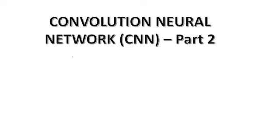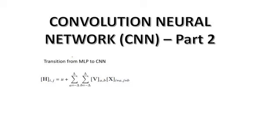Hello everyone, welcome back to By Itself CEC. We are doing part 2 of the lecture on convolution neural networks. In the previous lecture, we saw how an MLP transitions into a convolution neural network by virtue of translation invariance and locality. We found an equation where the input weight information loses the location information — this is also known as the kernel, and what is happening is basically a cross-correlation.